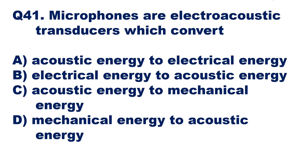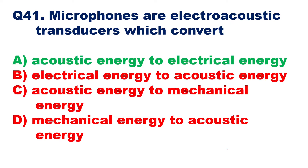If you see what a microphone does with a diagram, you have a microphone where you speak and give sound waves. The microphone converts those sound waves into an electrical signal which goes to the wire, and then you can amplify it and give it to the speakers. Sound energy is converted to electrical energy, so option A is the right answer — acoustic energy to electrical energy.